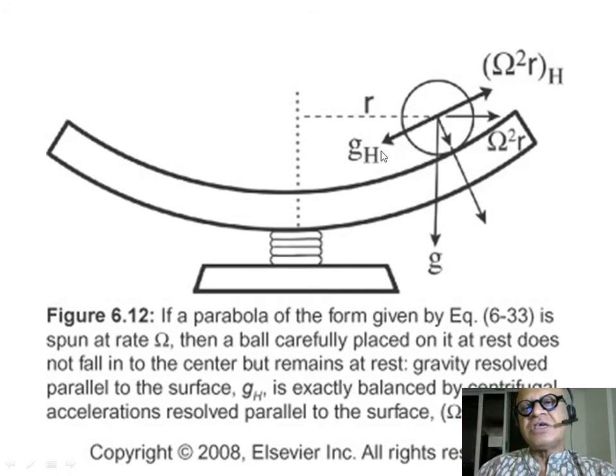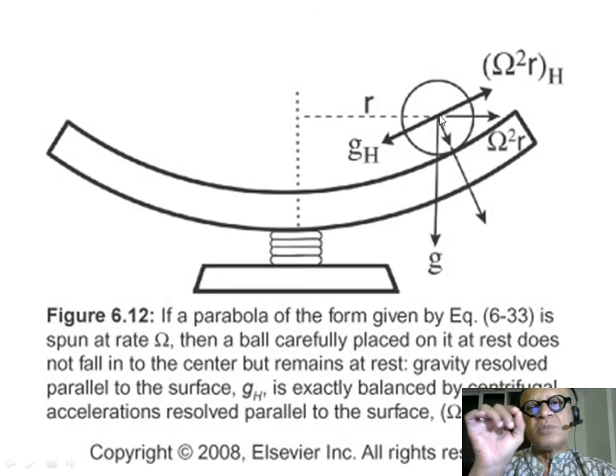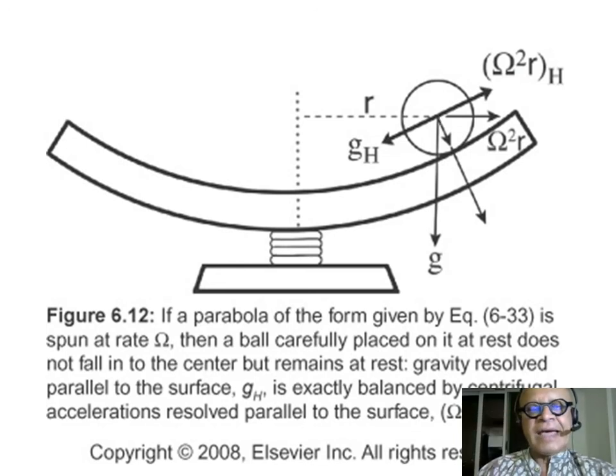So, you have gravity that's trying to pull it down the hill and the component of centrifugal force pulling it the other way. So, if it doesn't move, that means the two forces are in balance. Except here, this is the modified gravity because this is Earth's gravity.